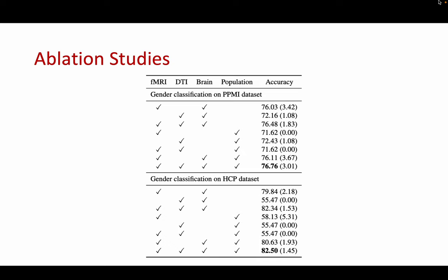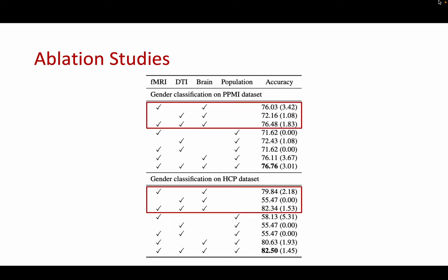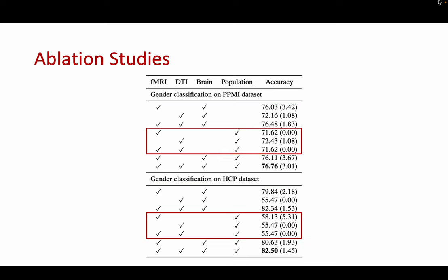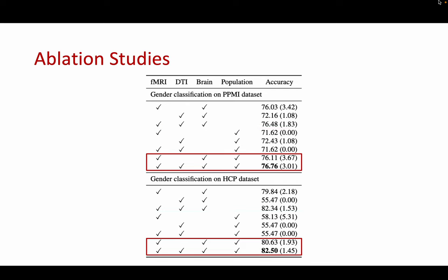We also performed ablation studies to analyze the effects of our design choices. When using only brain graphs, using both fMRI and DTI results in higher accuracy than using a single modality. However, when we use flattened matrices as inputs to the population graph, adding an additional modality can decrease model performance. This is because simply concatenating vectorized matrices causes the dimensionality of node features to be too high, resulting in severe overfitting. Lastly, we evaluated the two-stage method that uses both brain and population graphs, which shows using both graphs is beneficial. Overall, our ablation studies show the importance of using multiple modalities and how using a brain graph to extract subject representations is crucial.